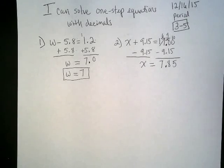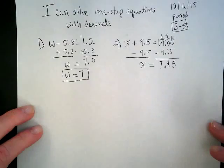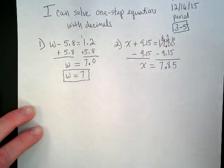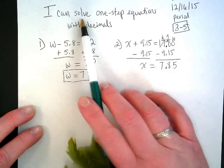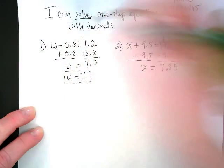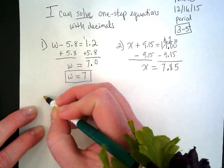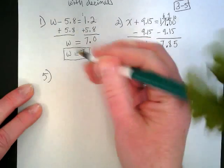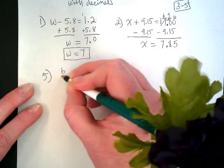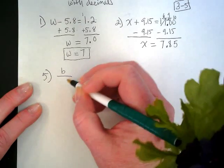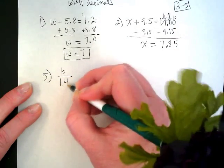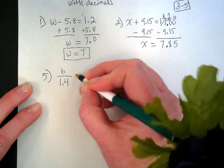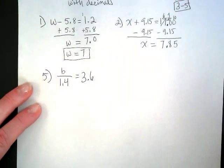So I hope you guys see this is very similar to what we were doing with one-step equations before. We just do the opposite. We're lining up our decimals because we're working with adding and subtracting decimals. But if you notice, I didn't say I can add and subtract one-step equations. What did we say up here? Solve. So we're also going to be doing some problems like number 5, where we have division and multiplication.